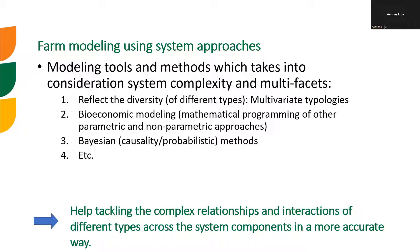We also start to use bioeconomic modeling, which can be either rigid mathematical programming, parametric or non-parametric approaches. It can be as advanced as the farm design model, or it can be much simpler, composed of only mathematical equations with biophysical functional equations. We also start to use more Bayesian methods, where we track the causality between system components of different types — economic, social, institutional, but also biophysical: soil, plant, et cetera.